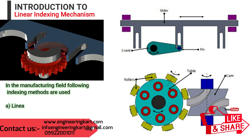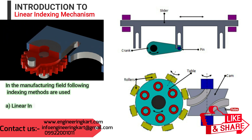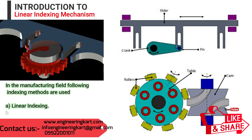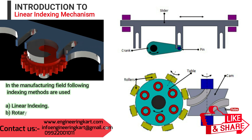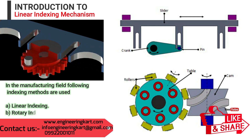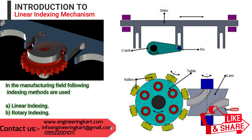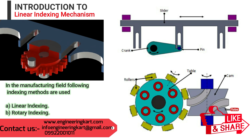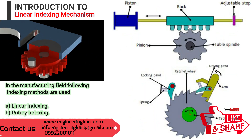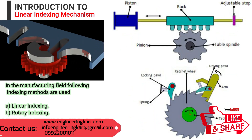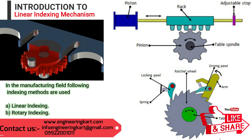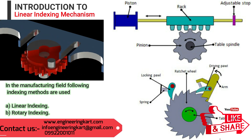There are several methods used to index, but the important types are ratchet and pawl, rack and pinion, Geneva mechanism, cam drive rotary indexing mechanism, and geared drives. Linear and rotary indexing are the two major categories.